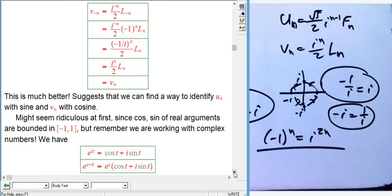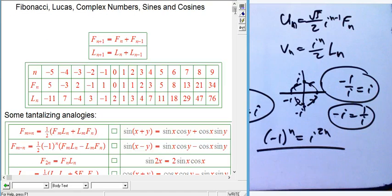So it's very, very suggestive that u_n should be the sine of something and v_n should be the cosine of something. But hopefully, in between the two videos, you looked at this and realized how utterly ridiculous that seems at first.